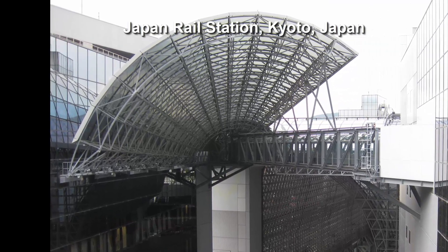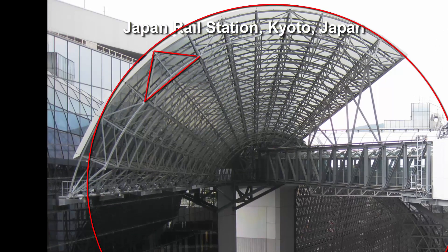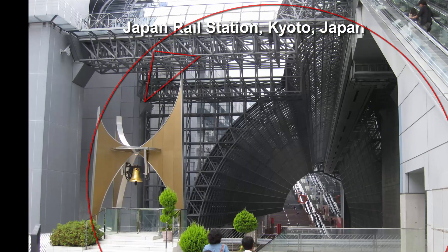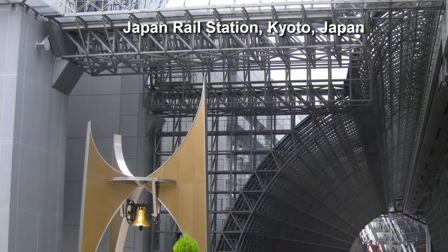Many different designs have been tried. However, two important shapes that will be often seen are triangles and circles. This roof structure at Kyoto JR station has triangular trusses which together make an arch.